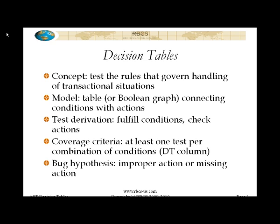So back to the decision table proper. The decision table, or a cause-effect graph, connects conditions with actions to be taken. There exists a process by which you would derive test cases from the decision table. That process involves making sure that you fulfill the different combinations of conditions shown in the table or graph, and you check that the appropriate actions — and only the appropriate actions — were taken for any given combination of conditions.